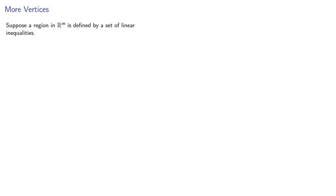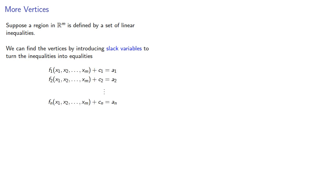Suppose a region in Rm is defined by a set of linear inequalities. We can find the vertices by introducing slack variables to turn the inequalities into equalities. The vertices correspond to solutions where the slack variables are non-negative for all i.